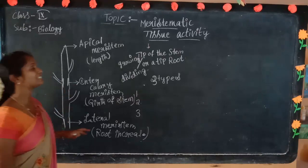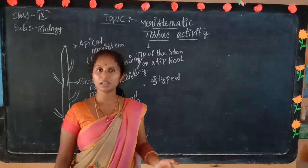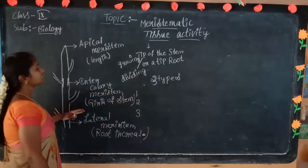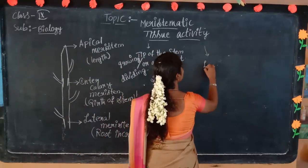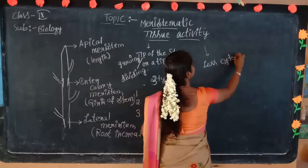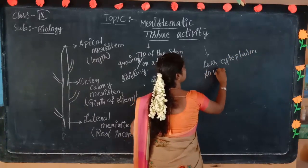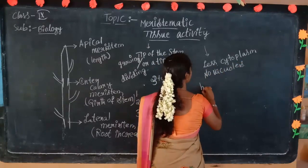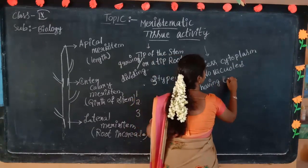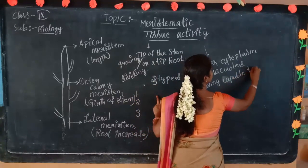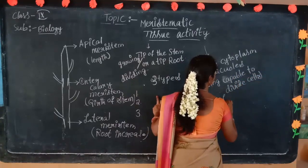These we already discussed in the last class. Today we are going to see the activity of meristematic tissues — how meristematic tissues are going to be produced. With the help of this activity we will perform it together. These meristematic tissues have less chlorophyll, less cytoplasm, and no vacuoles, but they have the capability to divide cells vastly.